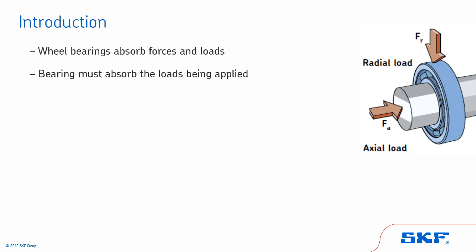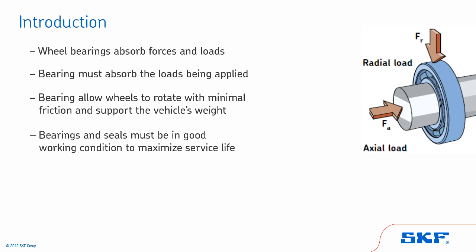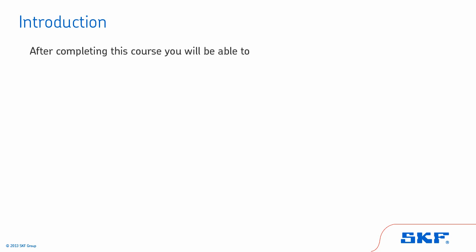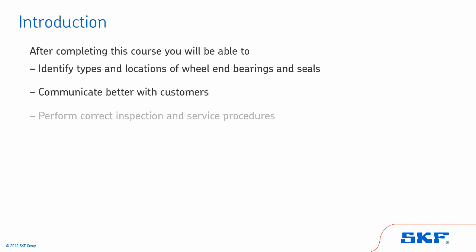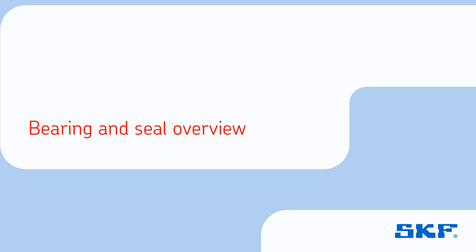The seal retains lubricants in the bearing and at the same time protects it from contaminants such as dirt, mud, road dust, and water. In order for the bearings and seals to perform these functions, they need to be in good working condition. Other components in the suspension system that are in poor condition can adversely affect the performance of the wheel bearings and seals and the handling of the vehicle. After completing this course, you will be able to identify types and locations of wheel end bearings and seals, communicate better with customers, perform the correct inspection and service procedures, and understand tips for proper bearing and seal installation and maintenance.